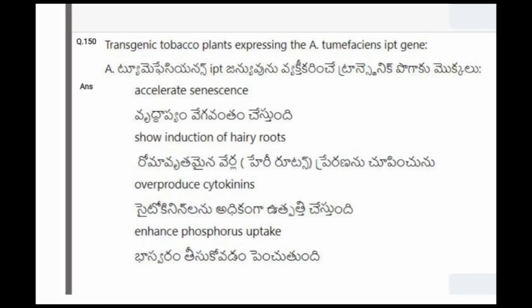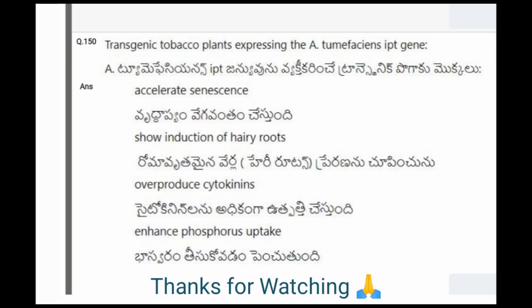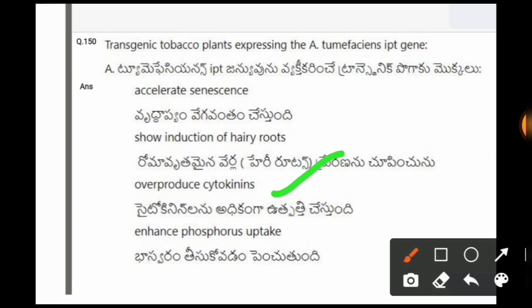Next question: Transgenic tobacco plants expressing the Agrobacterium tumefaciens IPT gene? The options are: accelerate senescence; show induction of hairy roots; overproduce cytokinins; enhance phosphorus uptake. The correct option is the third one, that is overproduce cytokinins.